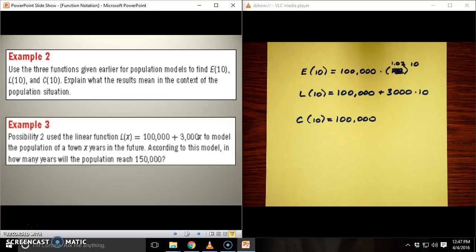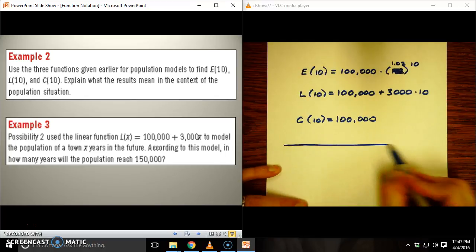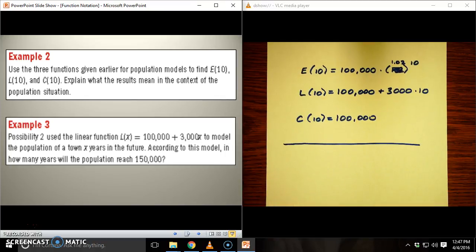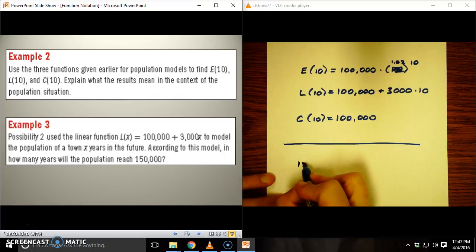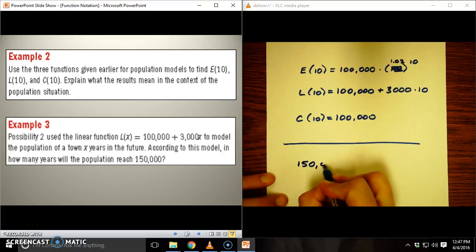So possibility 2 used the linear function L(x) = 100,000 + 3,000x. And I could answer this question: according to the model, in how many years will the population reach 150,000? So is that giving me the input or the output? Well, it's giving me the output, saying when is f(x) going to be 150,000?